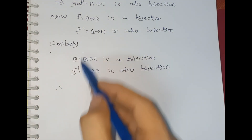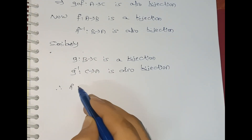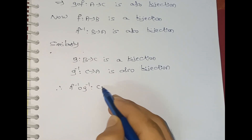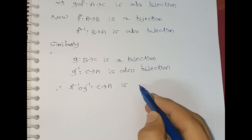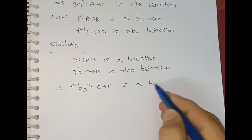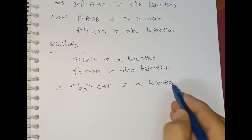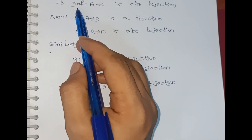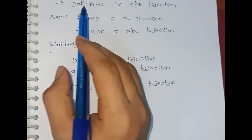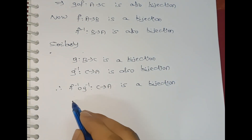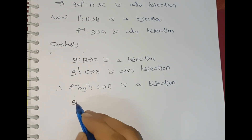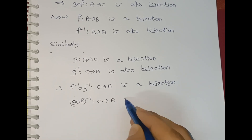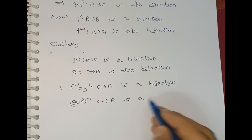Therefore we can conclude that f⁻¹∘g⁻¹ mapping C to A is a bijection. Also, g∘f is a bijection, so its inverse is also a bijection — that is, (g∘f)⁻¹ mapping C to A is a bijection.